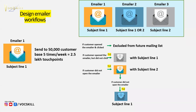Because of an earlier domain blacklisting incident, we decided to send to 50,000 customers per day, five days a week — reaching 2.5 lakh people in a week. We did not want to push everything out at once and risk being blacklisted again, so we spread out the sends carefully.